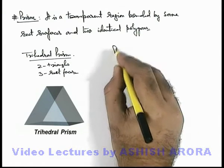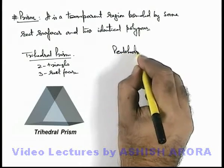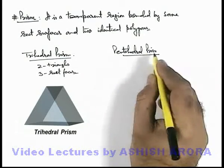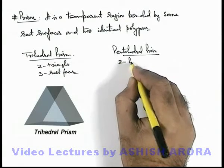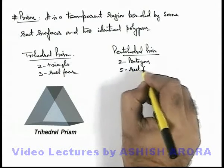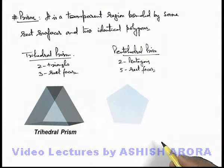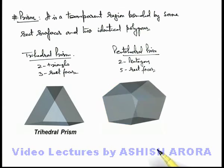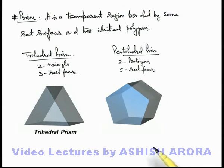Similarly, here we can define a penta-hedral prism. As the name implies, there will be 5 rectangular surfaces and rather than a triangle we use 2 pentagons and 5 rectangular faces. If there is a pentagon and on the 5 edges of this pentagon, 5 rectangular faces are placed end to end, then the region bounded by these 5 rectangular faces and 2 pentagons, if it is filled with a transparent medium, then this device obtained we define as a penta-hedral prism.